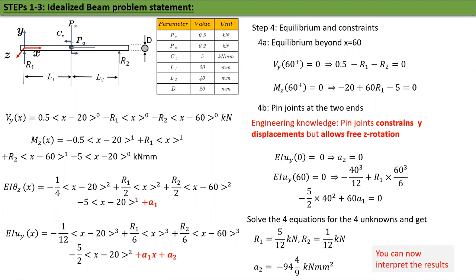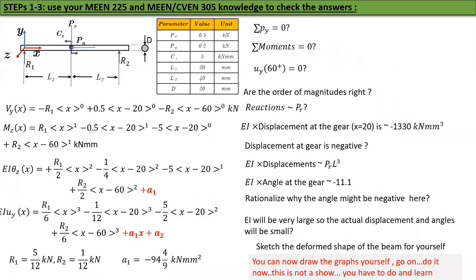You are now ready to interpret the results. But before that you have to make sure that your answers check out. Are the summation of forces throughout the whole body equal to 0? Are the summation of moments equal to 0? Is UI at 60 equal to 0? Are the order of magnitudes right? You better verify that these things are correct by substitution and checking.